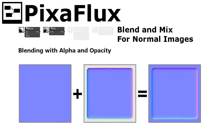When blending with alpha and opacity, the foreground normal image is composed over the background using the alpha channel and the opacity value. The final result is normalized. To compose with alpha and opacity, you use the blend and mix nodes in the compose nodes toolbar submenu.